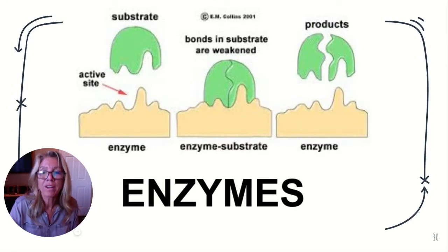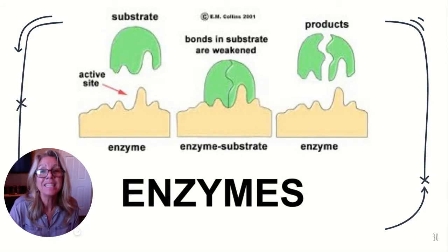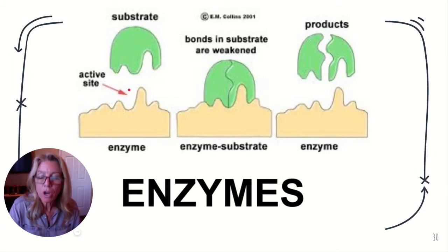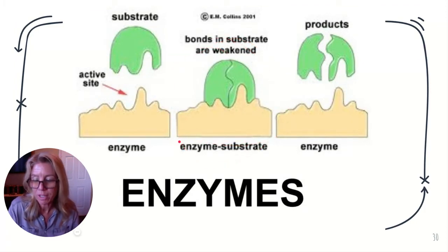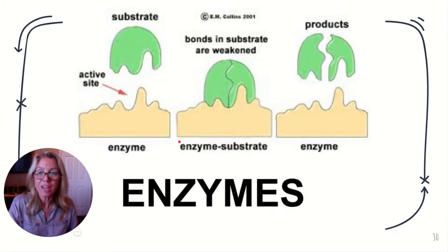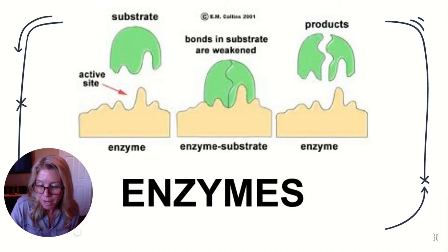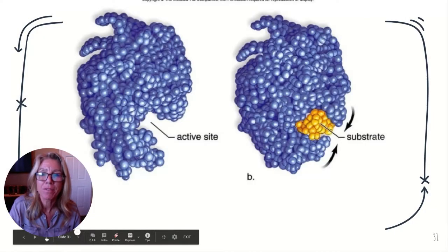An enzyme can increase the reaction rate by more than 10 million times. The substrate is whatever's binding onto that enzyme. When the substrate and enzyme are joined together, that's referred to as the enzyme-substrate complex. The active site is the part of the enzyme that binds temporarily with the substrate. Any factor that alters the active site is going to alter its functionality.